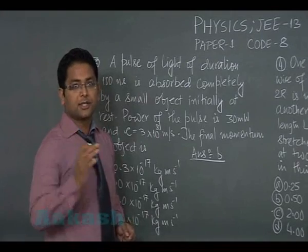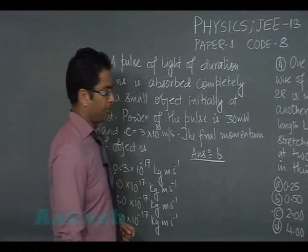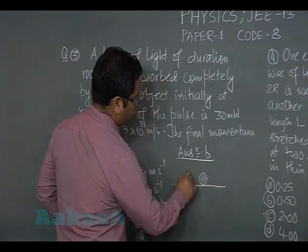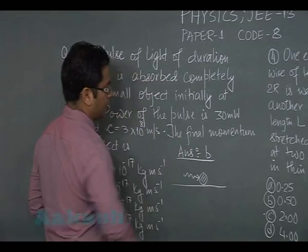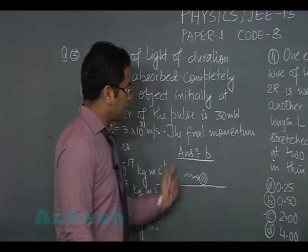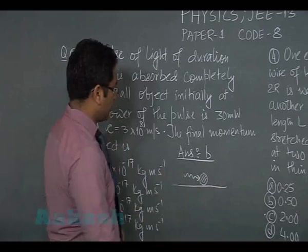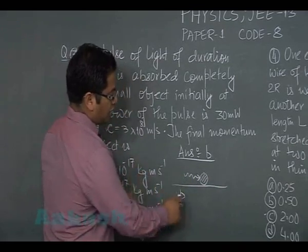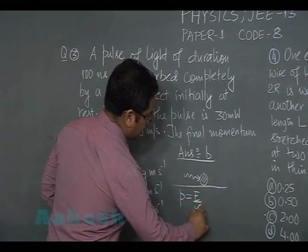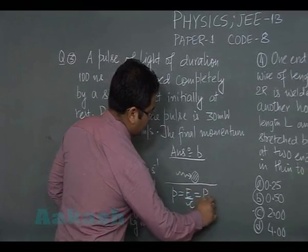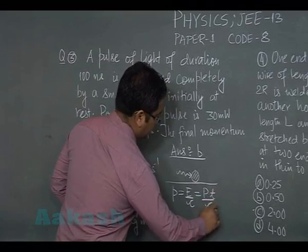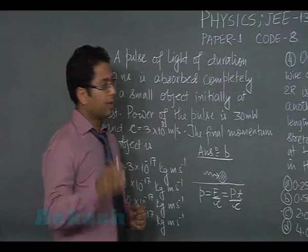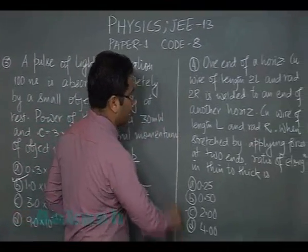Using conservation of linear momentum — when the photon is incident on the ball and completely absorbed, all the photon's momentum is transferred to the ball. So the final momentum of the ball equals the initial momentum of the photon, which is E/c. Writing E as P×t, the final momentum is P·t/c, which gives option B. Now let's go to question number four.